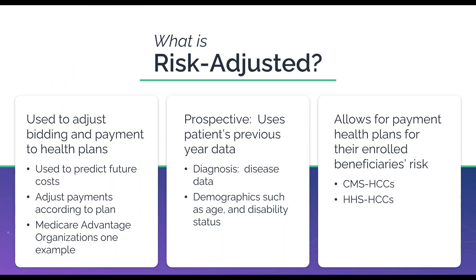Risk-adjusted reimbursement models are used to predict future costs and subsequently payments to providers for healthcare services for covered lives or enrolled beneficiaries. While there are different models, such as CMS's Medicare Advantage or Health and Human Services HHS health exchange plans, the fundamental principles are the same. Our presentation is focused on Medicare Advantage plans and HCCs. The CMS-HCC risk adjustment model is prospective in that it uses health status in a base year to predict a beneficiary's annual expected cost in the following payment year. There are important timeframes to consider for the model.